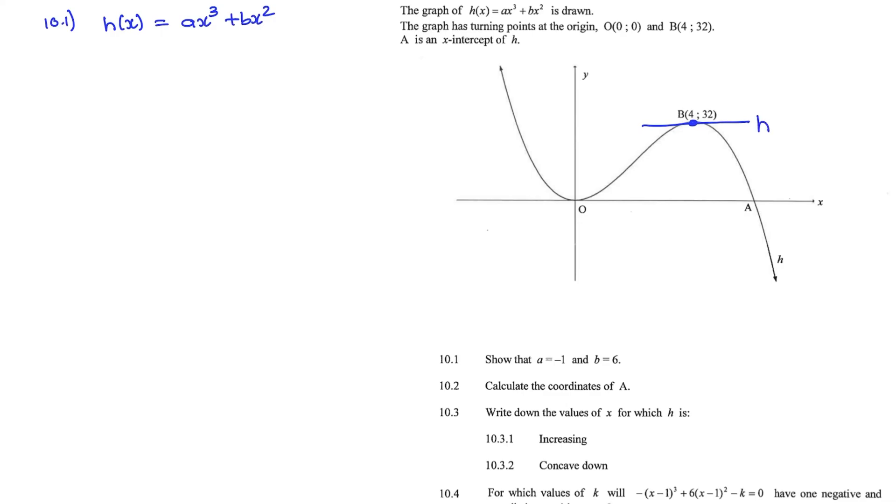So at this point, we know that the first derivative is equal to 0 because the gradient at the turning point is 0, and the first derivative represents gradient. So if I find the first derivative of H(x), I have 3Ax squared plus 2Bx. So we know that at point B, that is equal to 0.